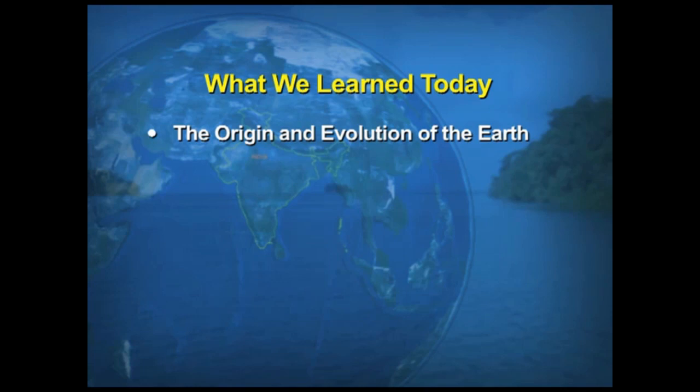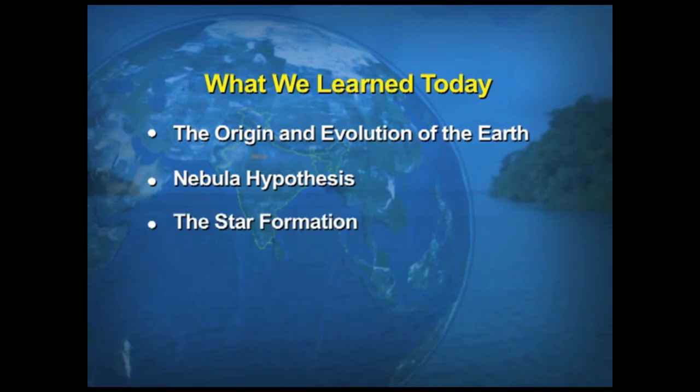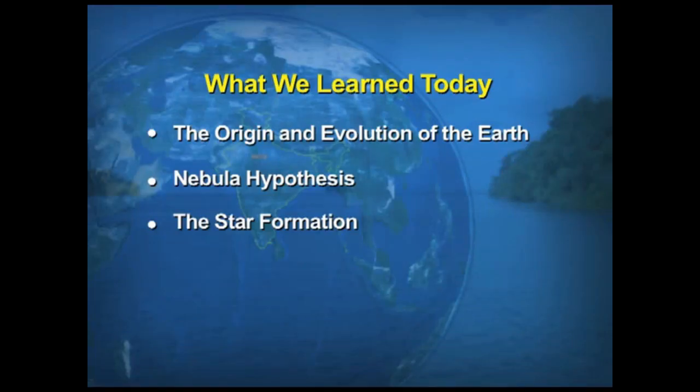To summarize: we talked about different theories about the origin of the Earth. The earliest theories were the nebular hypothesis, about the Earth being formed from a nebula. Later, scientists addressed this as the origin of the universe rather than just the Earth itself. Star formation is an important aspect of the Big Bang Theory, which has three stages. The formation of planets also happens in stages. We also discussed our solar system — the inner planets, the terrestrial planets, and the Jovian planets — as well as the evolution of the Earth.